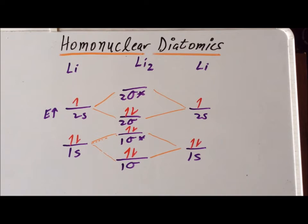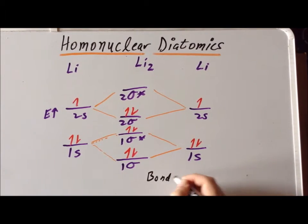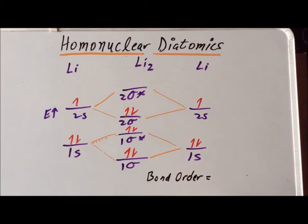Our next step is to calculate the bond order for this particular compound. We have four electrons in bonding orbitals and two electrons in antibonding orbitals. We subtract the antibonding from the bonding electrons divided by two. This gives us a bond order of one, which is consistent with our intuitive understanding of a single bond between two atoms.